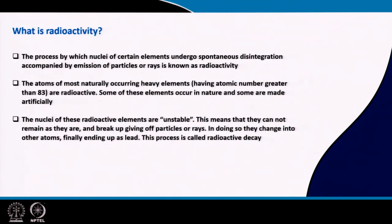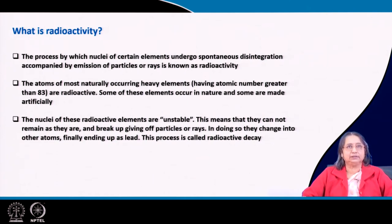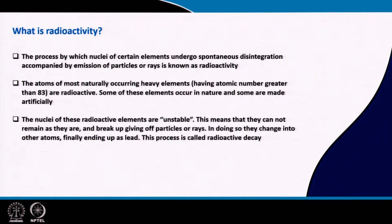What is radioactivity? Some nuclei undergo very spontaneous disintegration, and this disintegration is accompanied by emission of particles or rays, such as alpha particles and beta particles. Which nuclei will be unstable depends on the atomic number and the neutron-to-proton ratio. We have seen that elements with atomic number greater than 83 have very unstable nuclei and become radioactive.